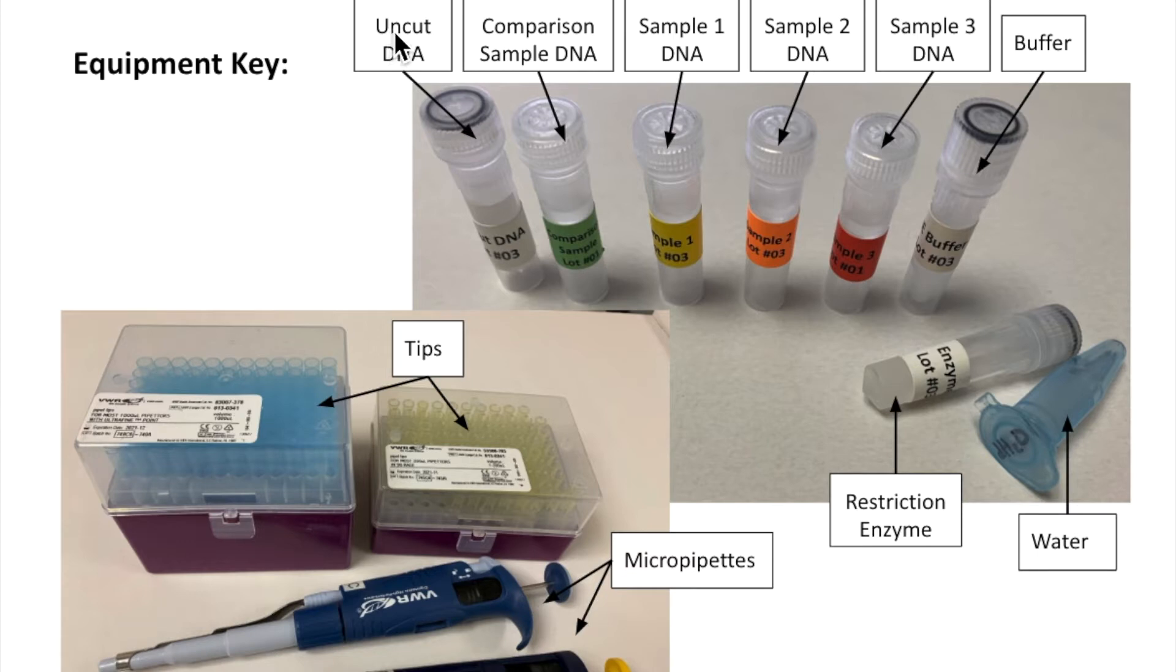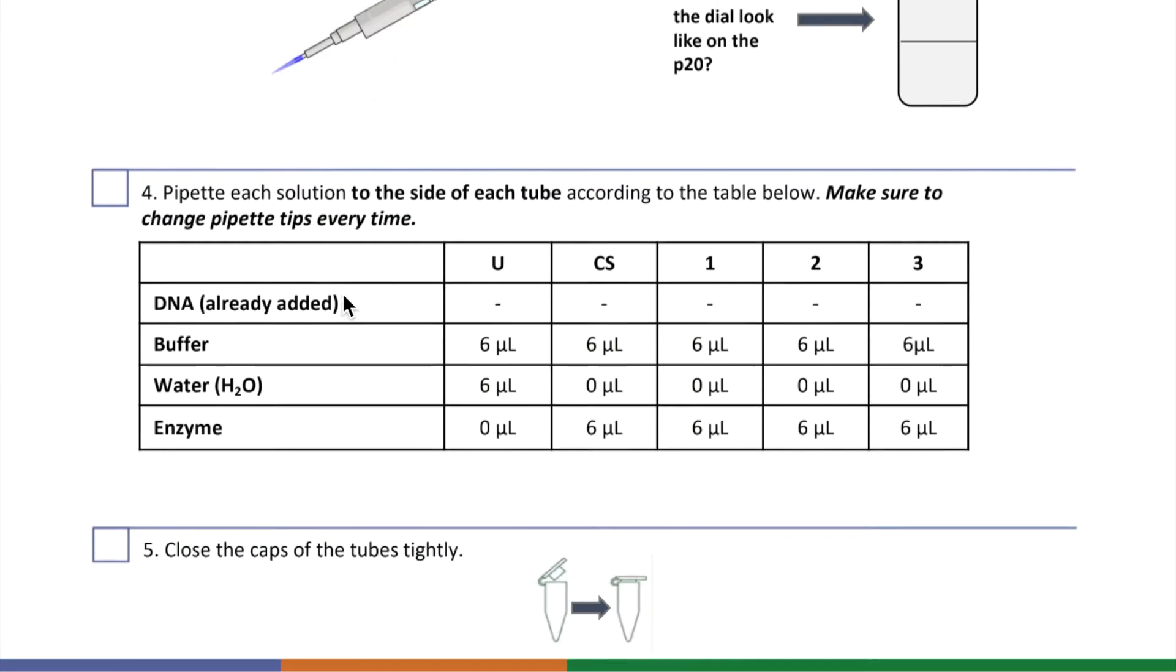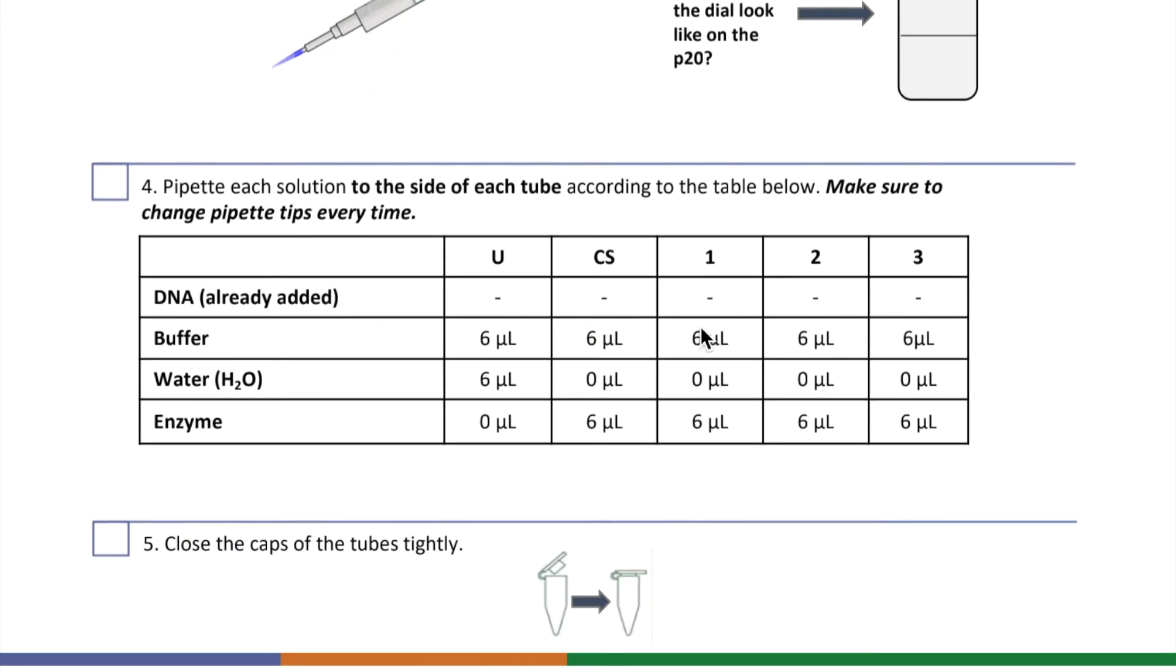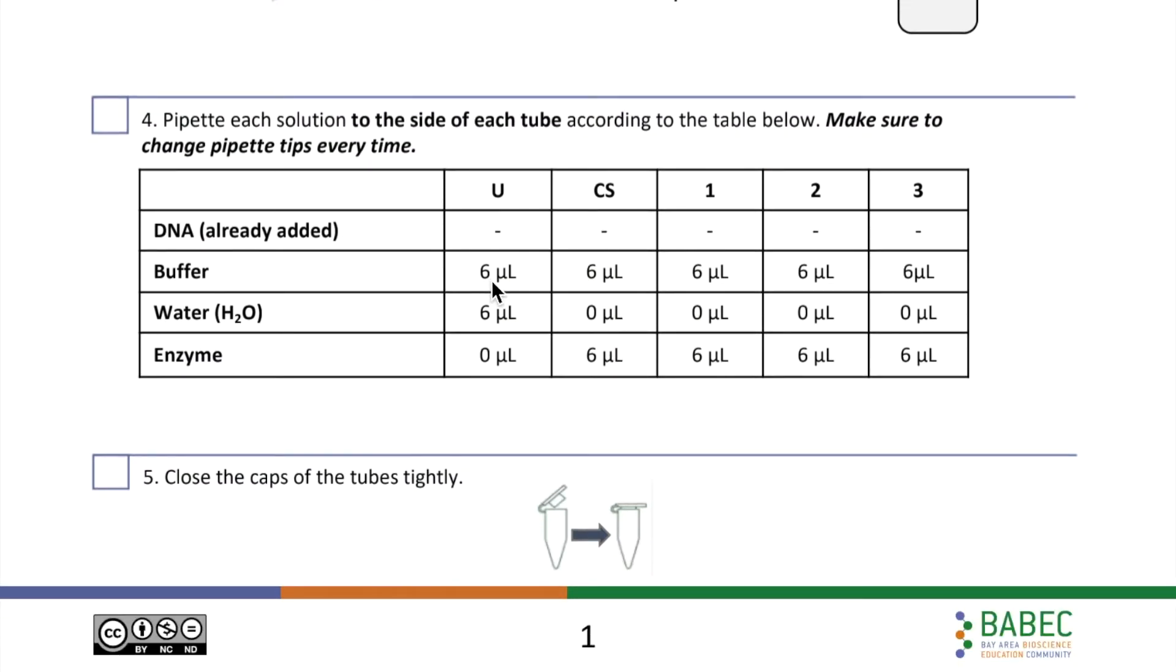When we join the video, we're halfway through Step 4 in the protocol. We have the DNA in each tube. Then we've already added 6 microliters of buffer to each tube. The buffer helps the Restriction Enzyme cut DNA. You'll be watching the last two parts, adding the water and the Restriction Enzyme.